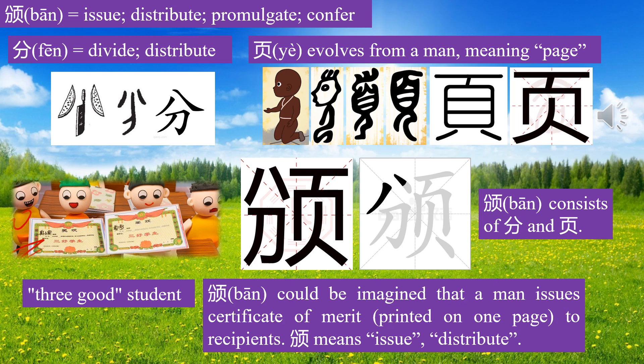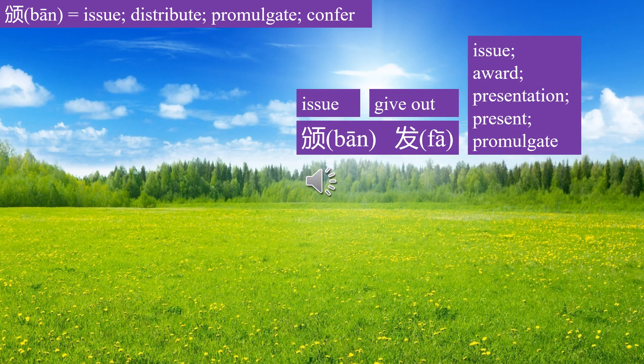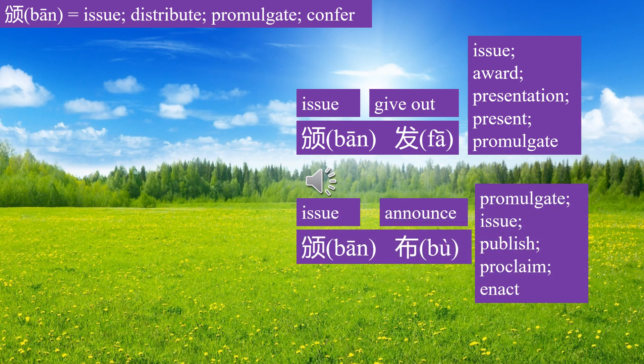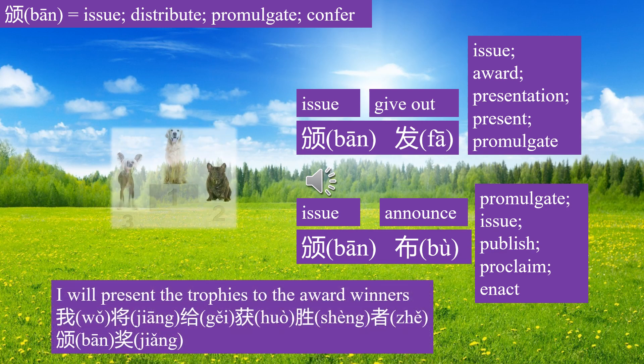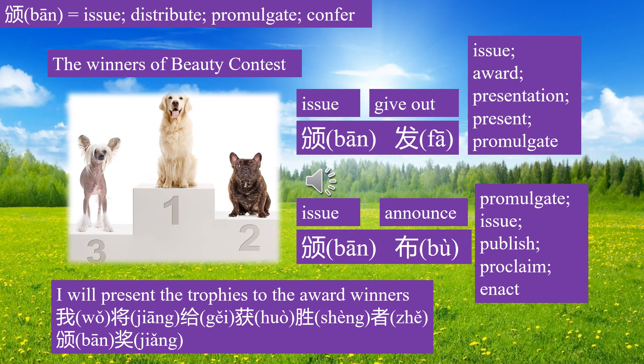Character 颁 means issue, distribute. 颁发 means issue; 颁布 means promulgate. I will present the trophies to the award winners — 我将给获胜者颁奖. The winners of the beauty contest.